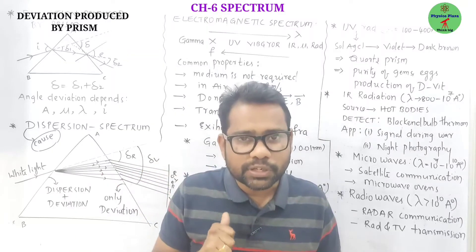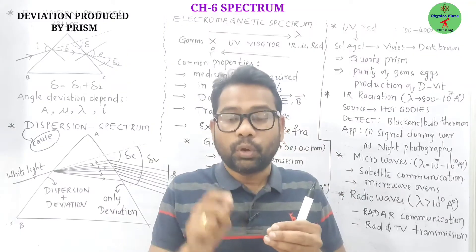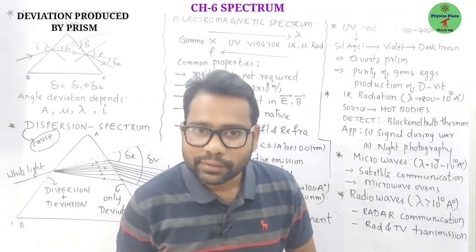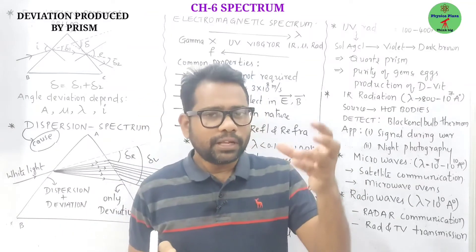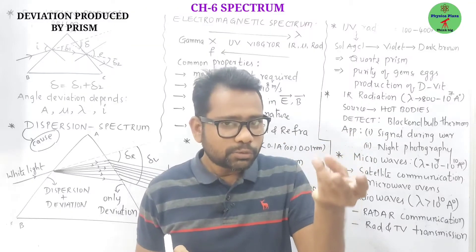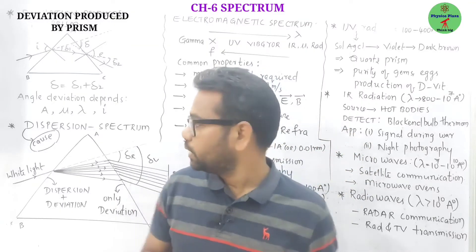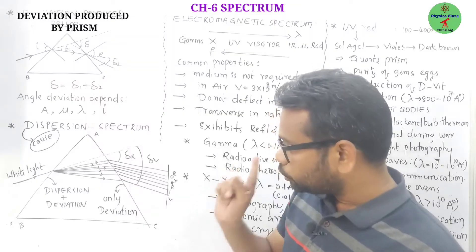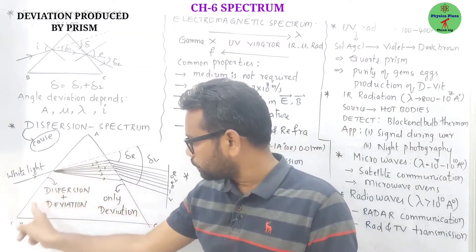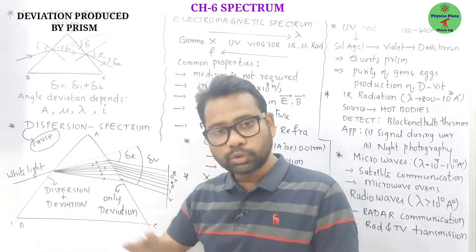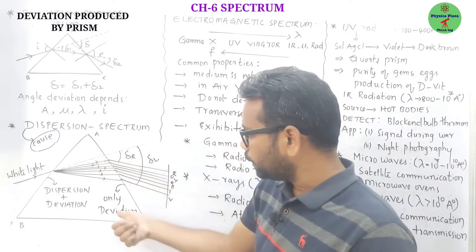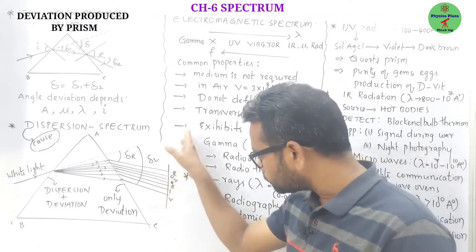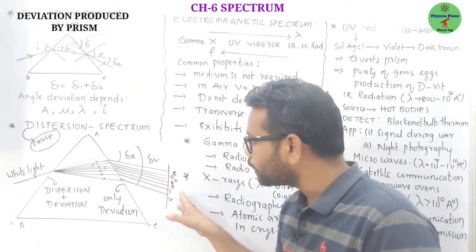What is the cause of dispersion? Different wavelengths travel with different speeds. For example, the wavelength of red color is more, so it deviates less and travels faster. Whereas violet color has less wavelength, deviates more, and travels with less speed. You can see that the deviation produced by violet color is more than that of red color. At the first refracting surface, both dispersion and deviation take place, whereas at the second refracting surface, only deviation takes place. The band of colors — band of wavelengths — so obtained on the screen is called a spectrum.